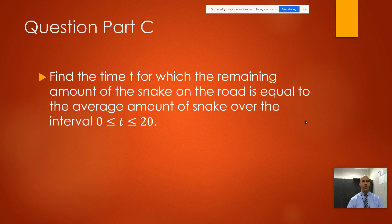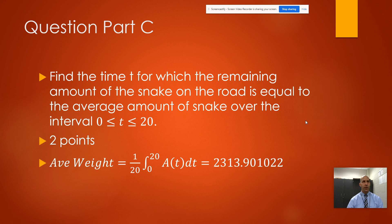This one is also out of two points. What we need to do is find the average rate or the average weight, which we're going to use the average value integral - the average value of a function integral.